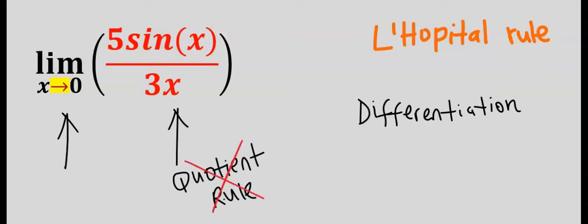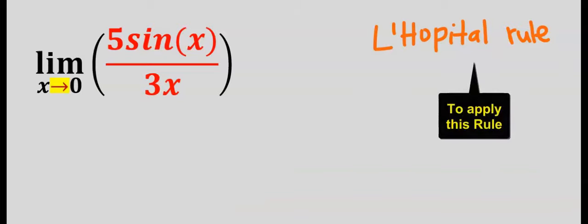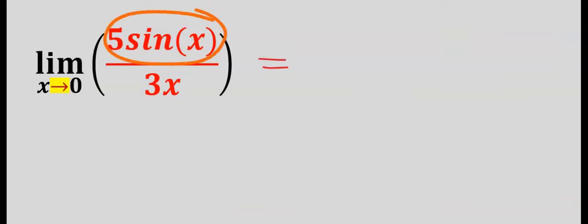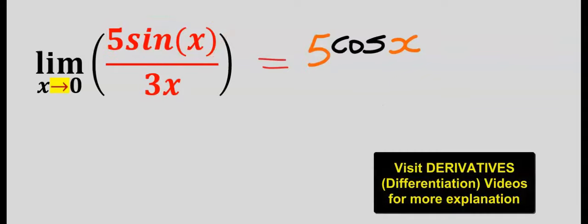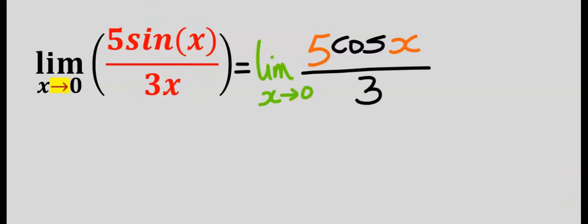To apply this, differentiate 5sin(x) and you have 5cos(x). Next, differentiate 3x and you have 3. Next, take the limit as x tends to zero.